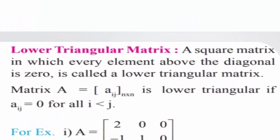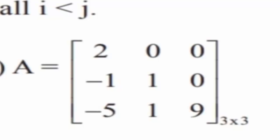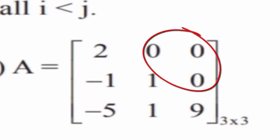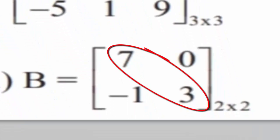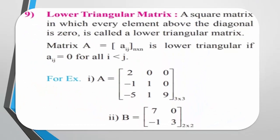Lower Triangular Matrix: A square matrix in which every element above the diagonal is 0 is called a lower triangular matrix. For matrix A with elements Aij of order m by n, it is lower triangular if Aij equals 0 for all i less than j. For example, in matrix A of order 3 by 3 the diagonal elements are 2, 1, 9 and all elements above the diagonal are 0. In matrix B of order 2 by 2 the diagonal elements are 7 and 3, and the element above the diagonal is 0. Both A and B are lower triangular matrices.